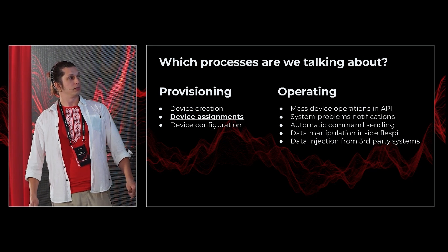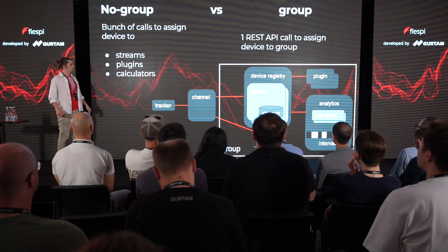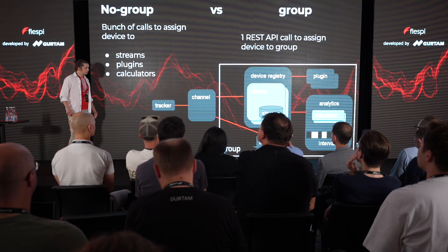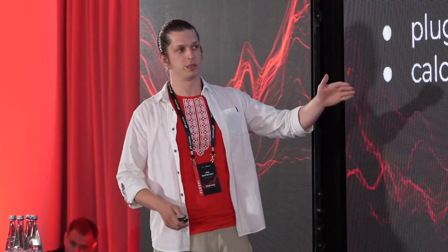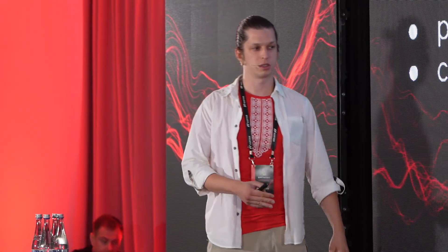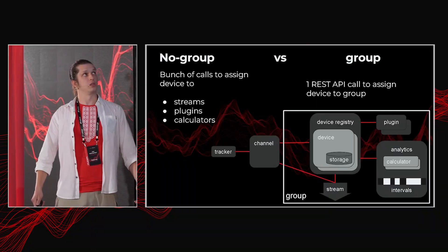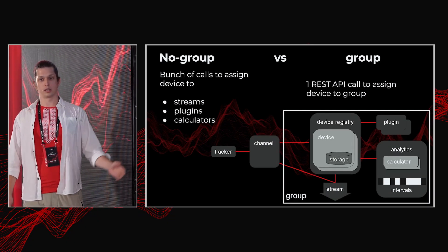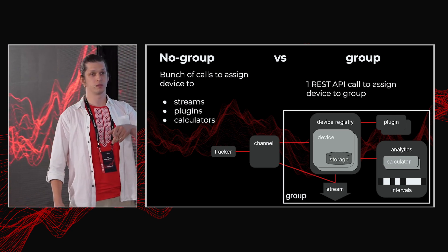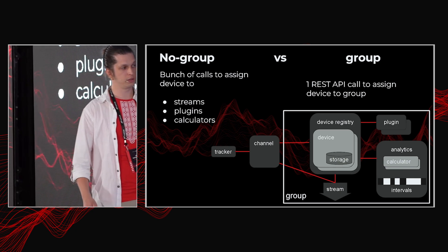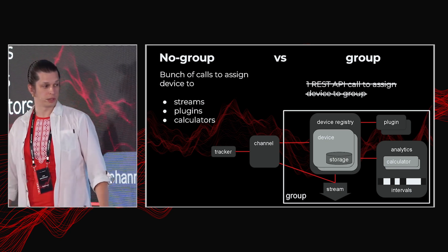The next automation topic is device assignments, and this is where our new Groups feature helps. You assign some instances to a group, and once a new device is added to the group, it will be automatically linked to everything else. So instead of having ten API calls after a device is created, you have just one API call to assign the device to a group — or you can even have a webhook that captures the device creation event and assigns it to a group, so no manual request is required at all.